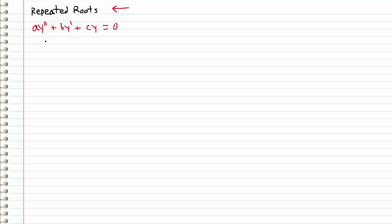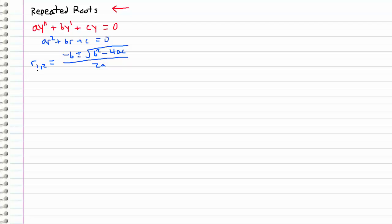We can go straight into the characteristic equation. Using the quadratic formula to solve it, we get r equals negative b plus or minus the square root of b squared minus 4ac, all over 2a. These are what our r1 and r2 roots are. In the repeated roots case, we only have a single root, so r1 equals r2, which we just call r.